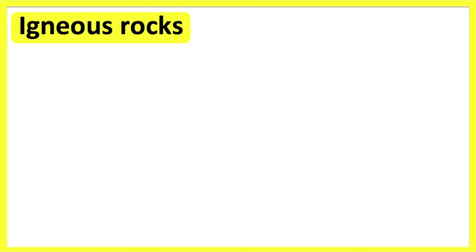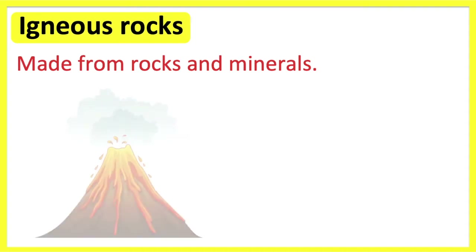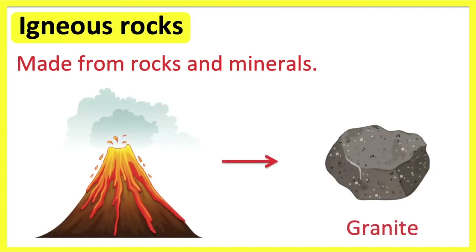Igneous rocks are made from melted rocks and minerals. They form when magma cools down and solidifies. An example of an igneous rock is granite.